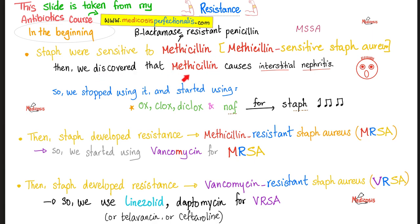Then a bad thing happened: we discovered that methicillin has horrible side effects, including kidney toxicity via interstitial nephritis. So we stopped using methicillin. To treat Methicillin-Sensitive Staph aureus, use methicillin alternatives: oxacillin, cloxacillin, dicloxacillin, and nafcillin. For Staph, use ox, clox, diclox, and naf.